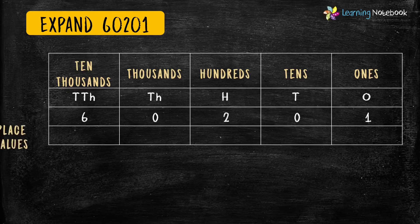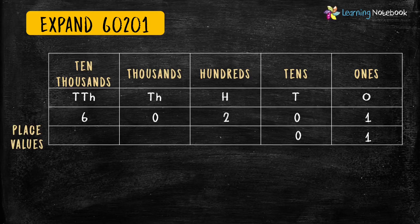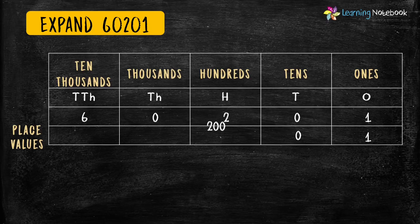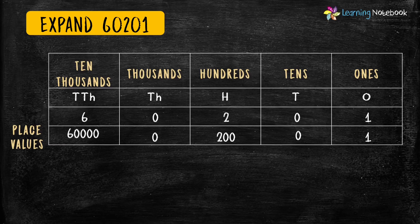The place value of 1 is 1. The place value of 0 is 0, because the place value of digit 0 always remains 0. The place value of digit 2 is 200. The place value of the next 0 is again 0. And the place value of 6 is 60,000.